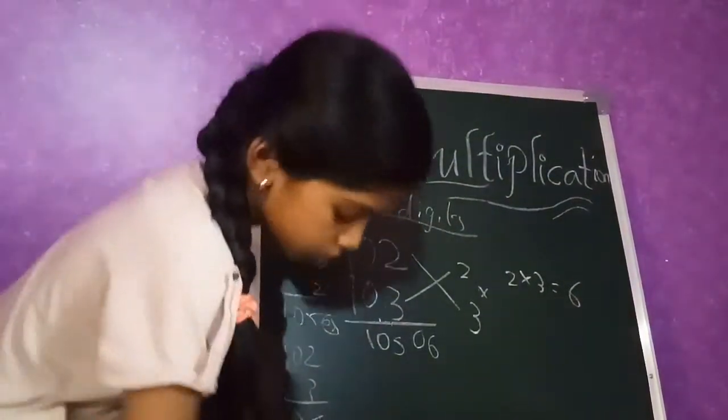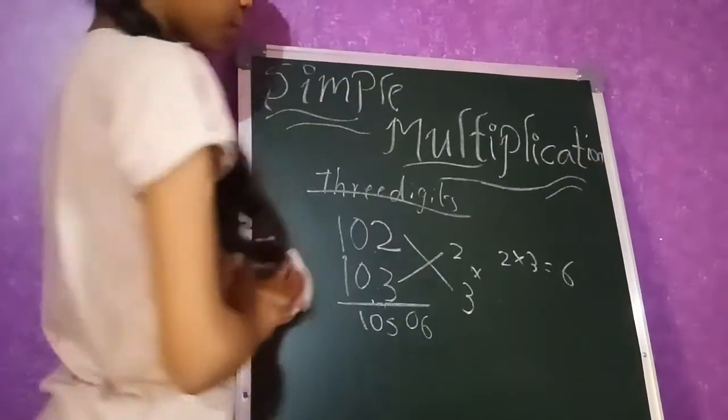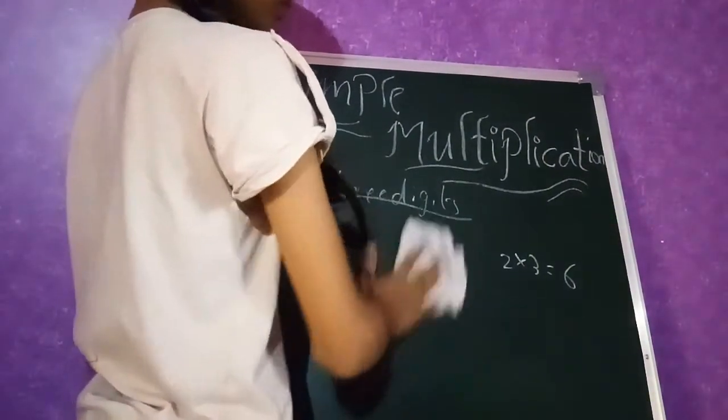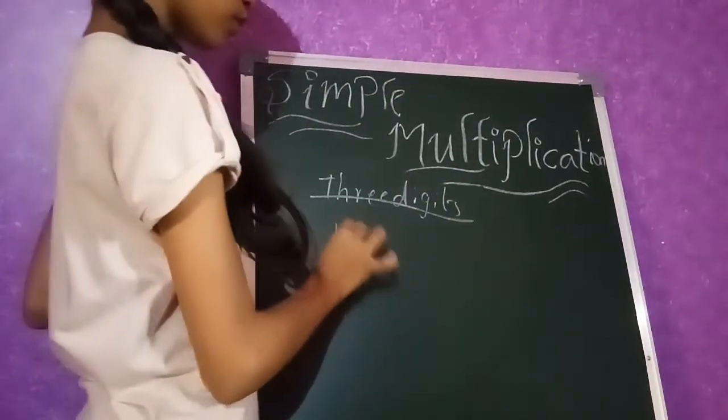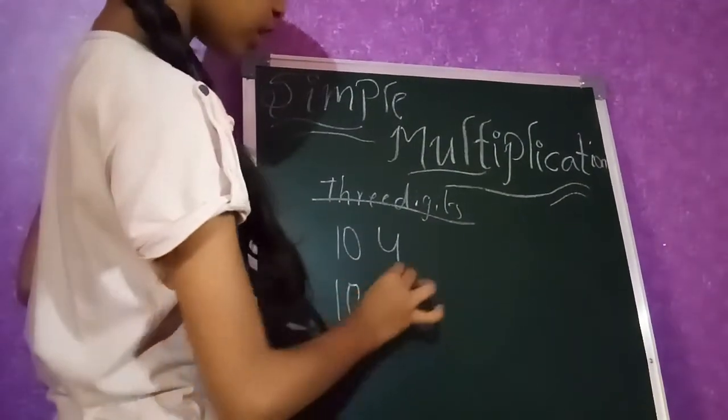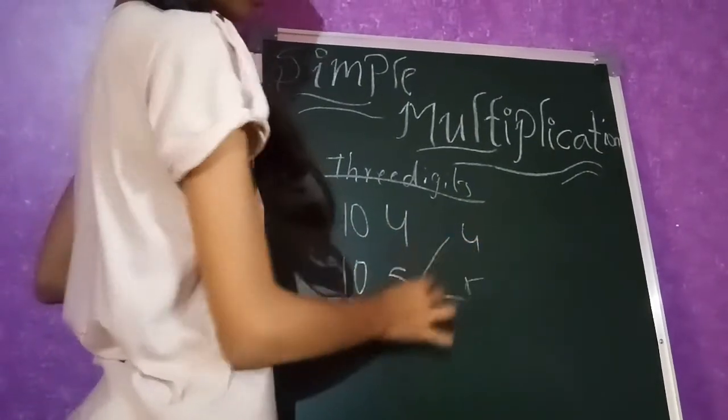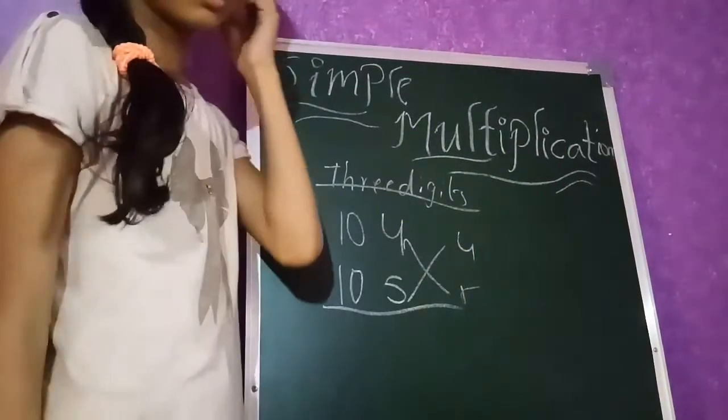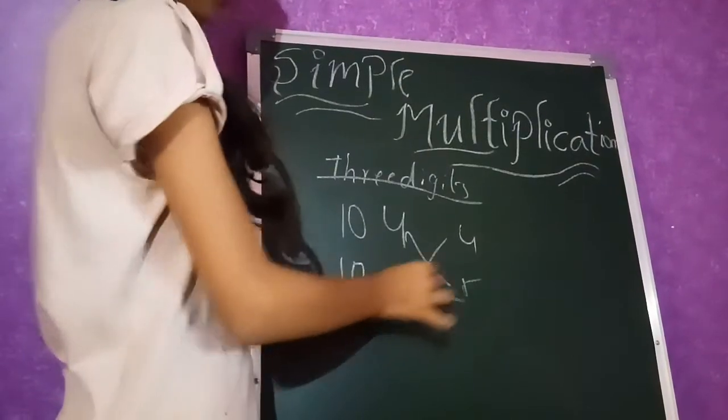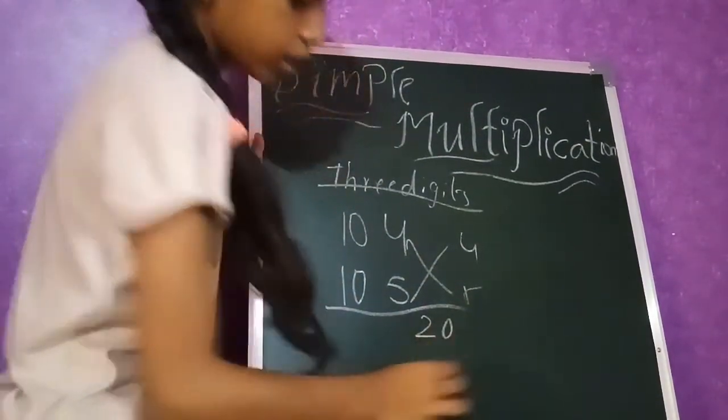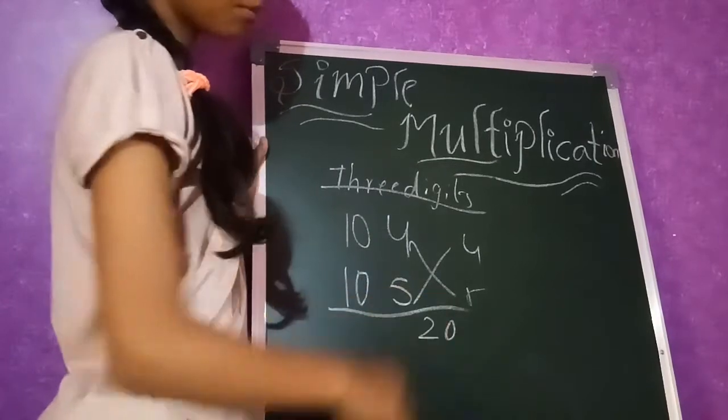If you want to check, check in your phone or in your calculator. 104 into 105. Same process, 4, 5. Like this you should keep. Means it's one arrow. 4 into 5, 20. Here 2 digits there. You can keep before, you know.